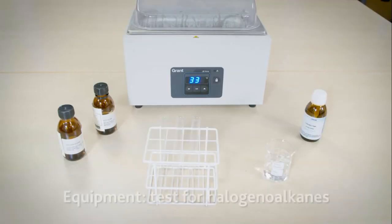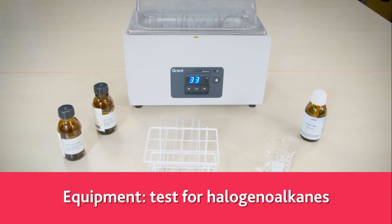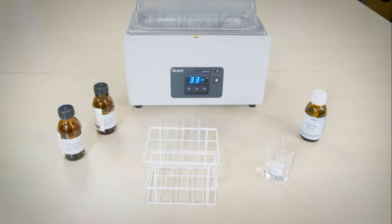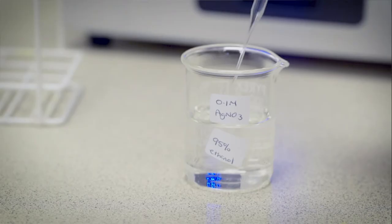To test for halogenoalkanes, the first step is to perform a substitution reaction, which releases the halide ion. The halide ion is then tested with silver nitrate to confirm the presence of either chloride, bromide or iodide.